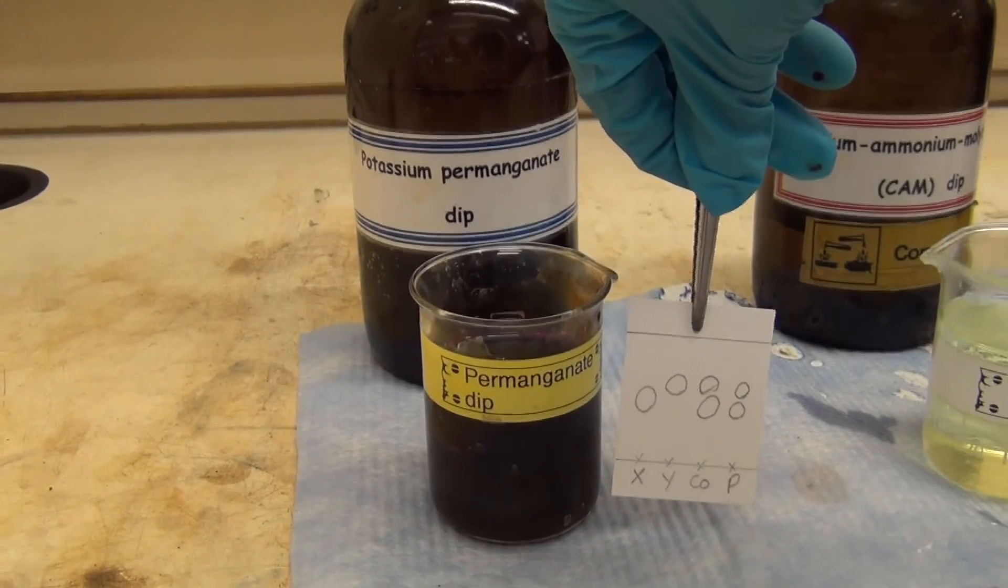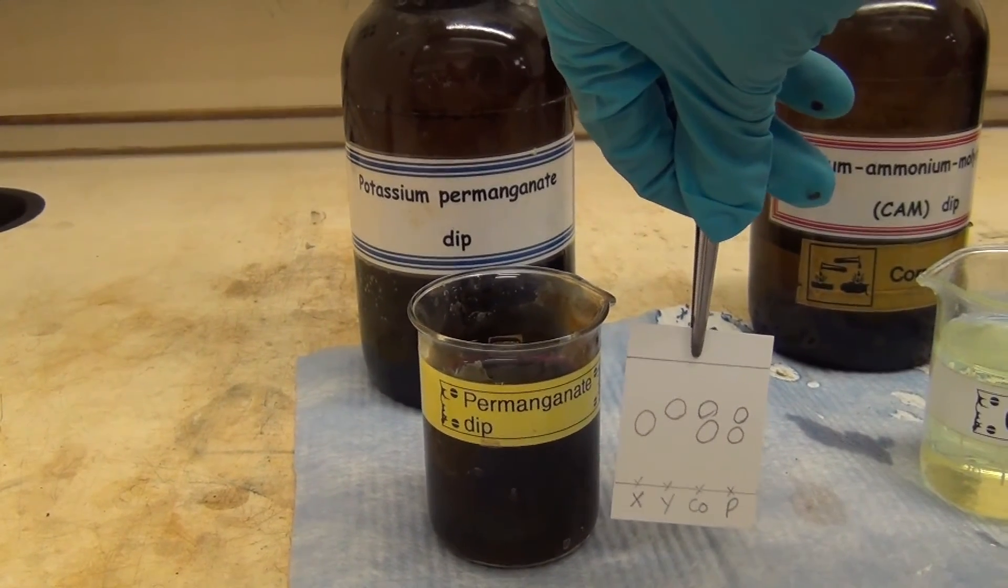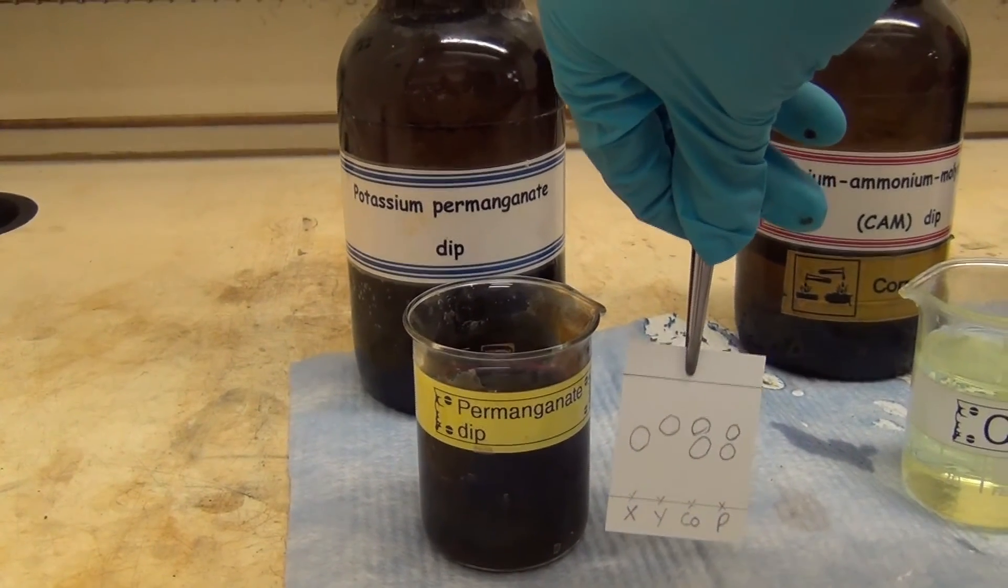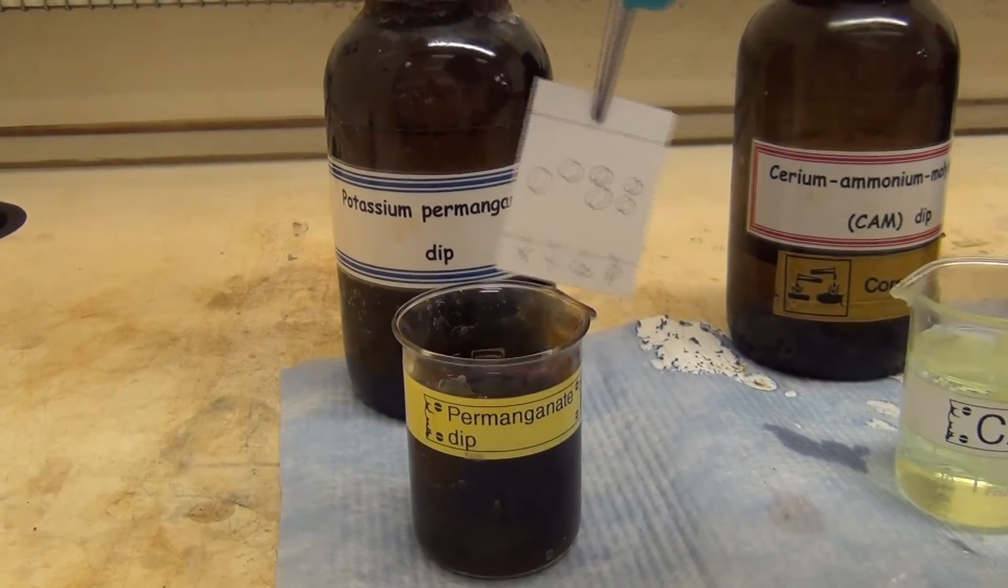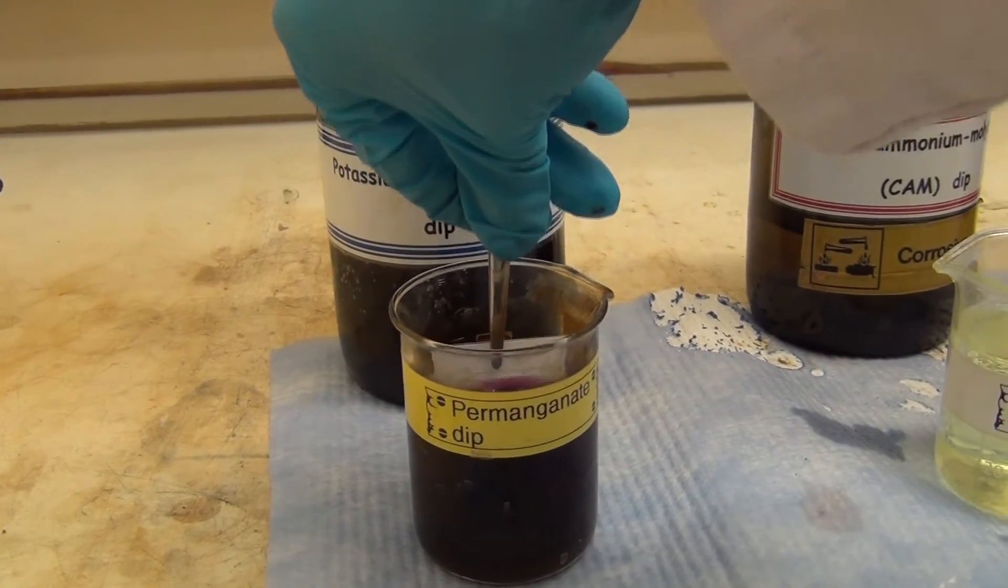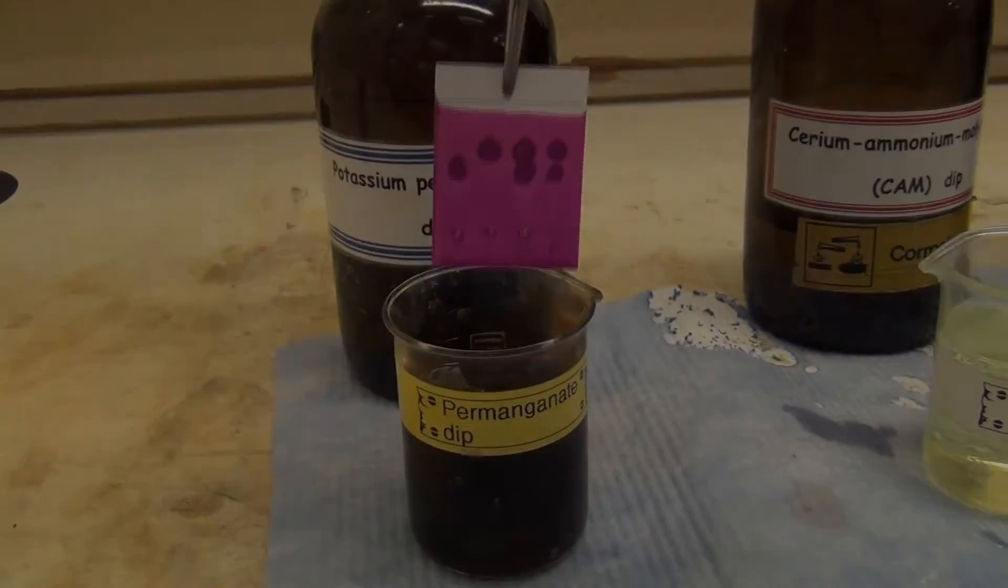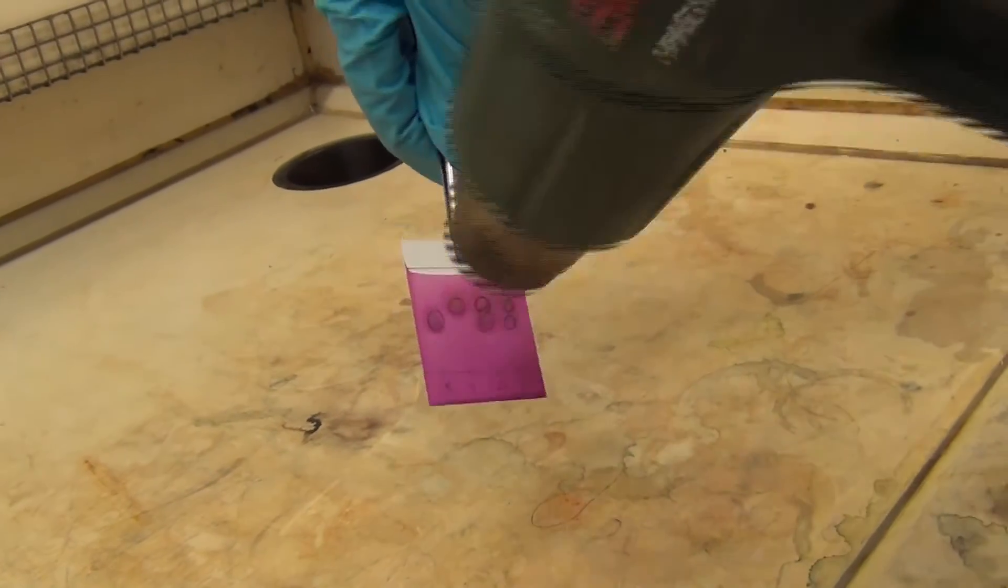However, UV does not always visualise all of the spots on our plate, and as it is a non-destructive technique, it is common to also check using a dip, such as permanganate. Dip the TLC plate into the dip, and then dry using a hairdryer to remove any excess dip.